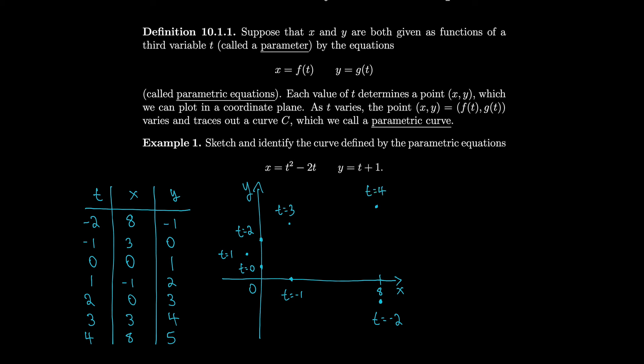Tracing these dots out, we get this nice parabola-looking shape. We have to be a little bit careful when tracing a parametric curve — the order matters. Because we went from t equals minus 2 all the way to positive 4, we should indicate that with arrows showing we're tracing the curve in this direction, to show that t is increasing. So you have extra information compared to a regular curve: here it matters which direction we trace. It looks like this is an x equals parabola.